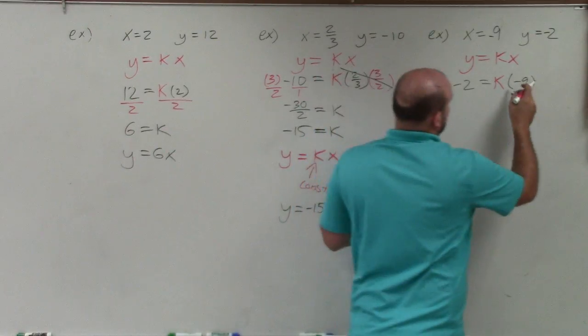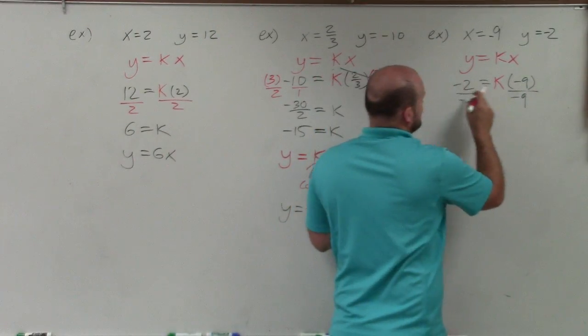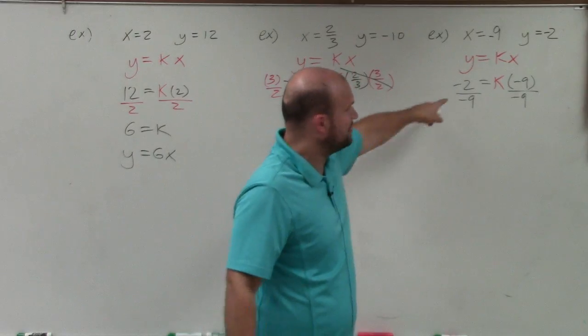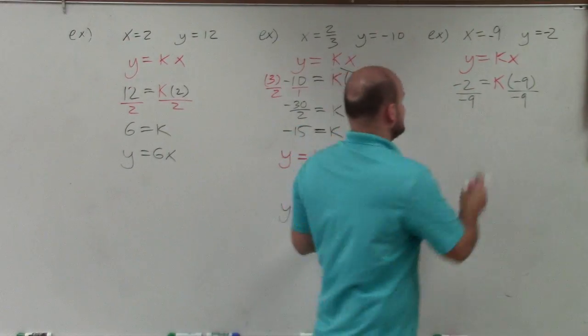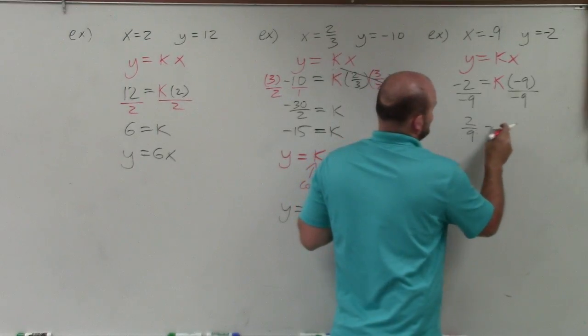Now, again, we solve. So I divide by negative 9 on both sides. We have a little issue here. The negatives divide out. But 9 does not evenly divide into 2. So guess what? I'm just going to leave it as is. I'm going to leave it as 2 ninths equals k.